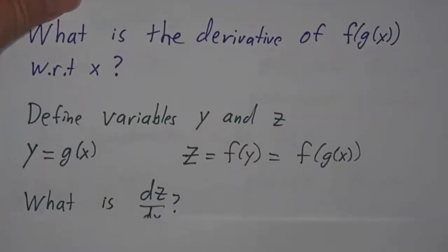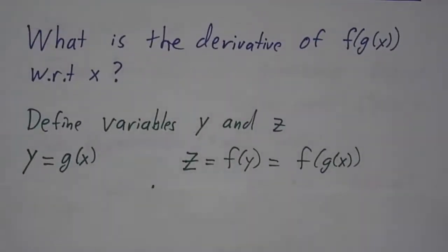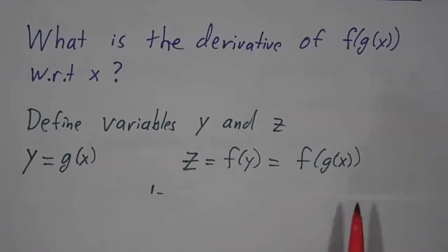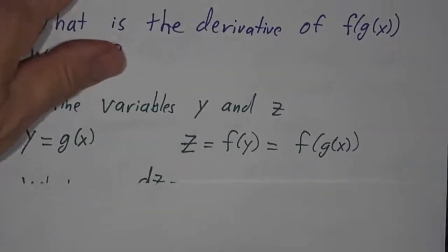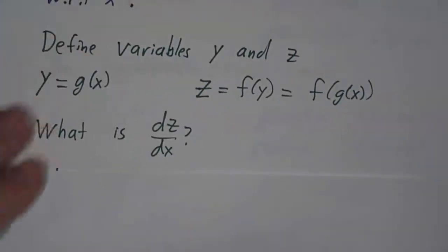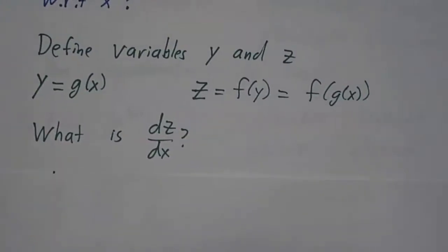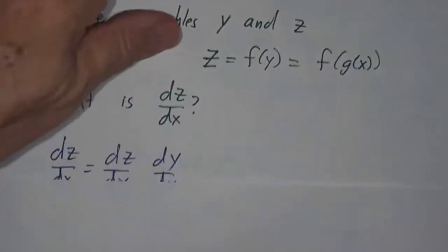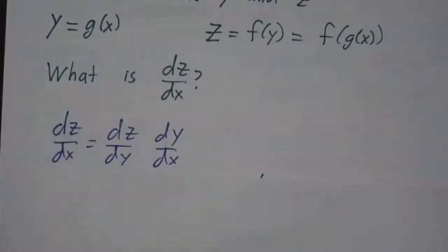One way you can do that is we can define variables y and z. So we'll let y be g of x, and let z be f of y, and that's f of g of x. And now we've got our three variables x, y, and z for applying Leibniz's version. So instead of saying what is the derivative of f of g of x, we can just say what is dz/dx? And Leibniz told us that dz/dx was dz/dy times dy/dx.